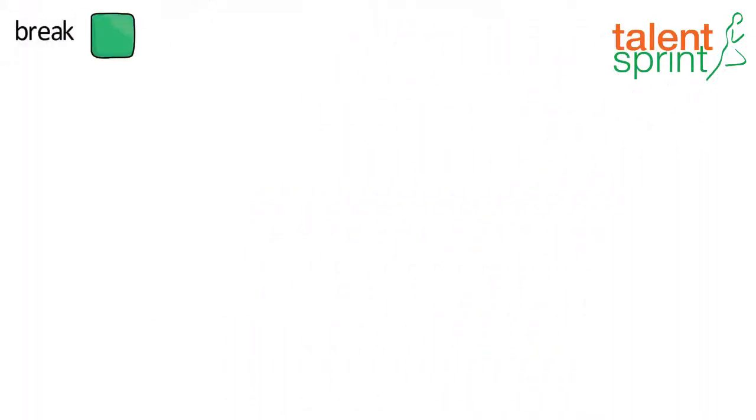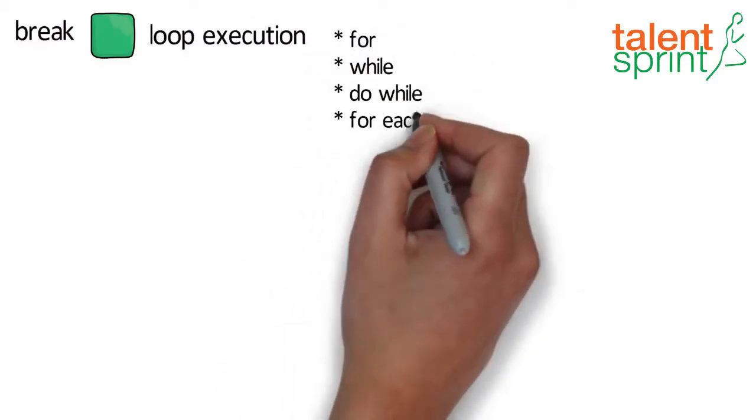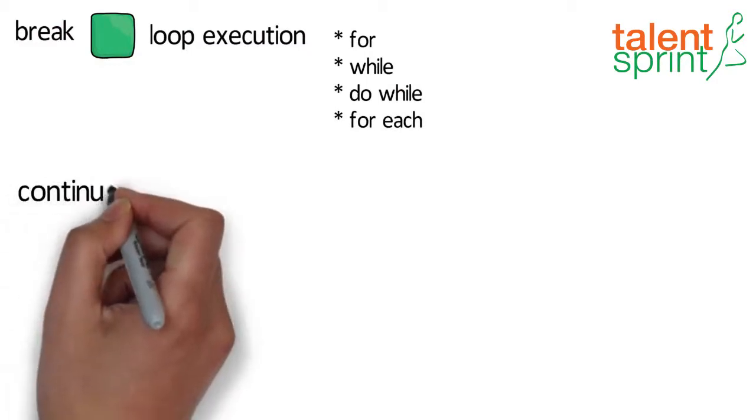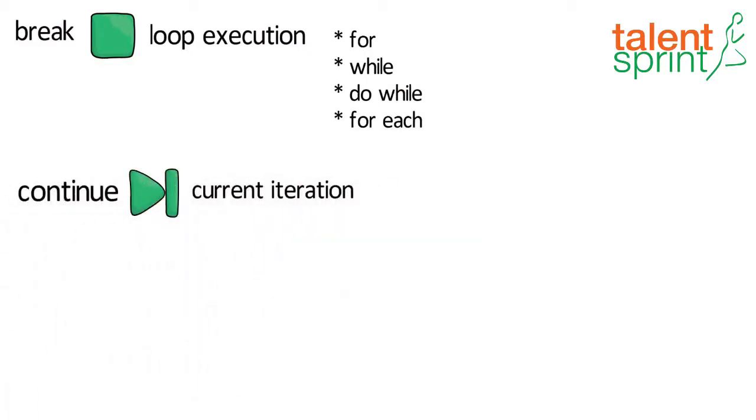Break keyword is used to stop a loop execution, which may be a for loop, while loop, do while, or for each loop, while the continue keyword is used to skip the particular iteration only in a loop execution.